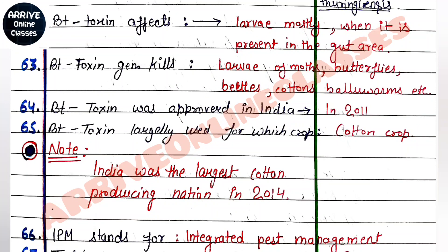BT toxin affects pests as follows. In India, in the early 20th century, many crops were destroyed by insects and pests. Chemicals extracted from bacteria were introduced, and insecticides were applied to larvae of moths, butterflies, and insects, and they were able to kill them.